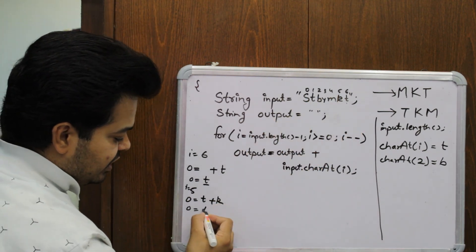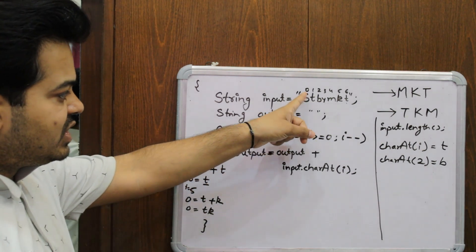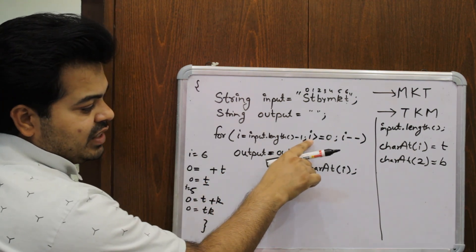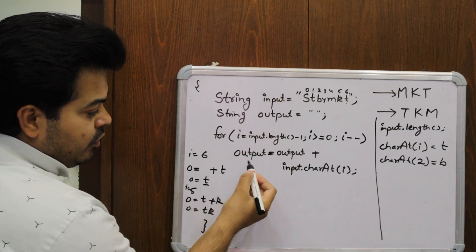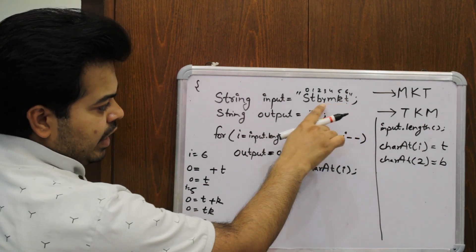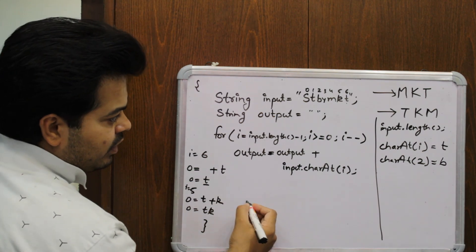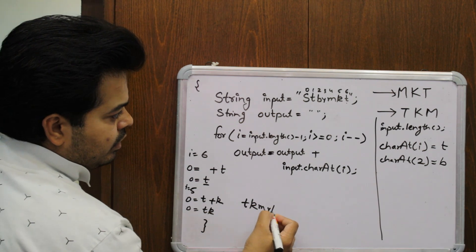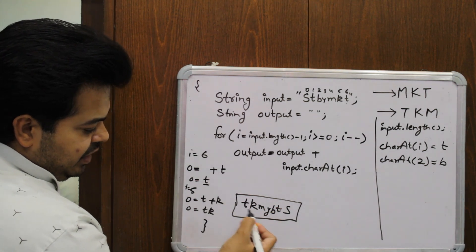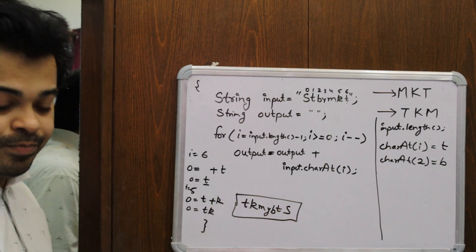The loop runs until i equals zero. When i is 0, output is 'tkm yb t' plus `charAt(0)` which is 's'. So finally your output will be 'tkm ybts'. Your input was 'stbymkd' — software testing by MKT — and your output is 'tkm ybts', which is the reverse. So this is your output.